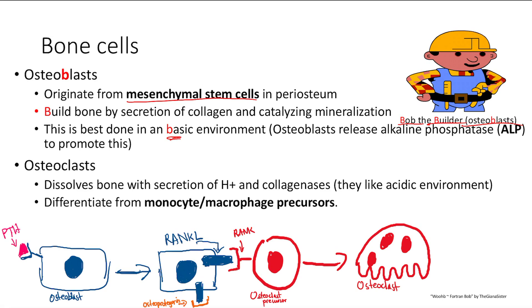Osteoclasts do the opposite — they dissolve bone. They secrete hydrogen ions and collagenases, so they prefer acidic environments. Osteoclasts differentiate from monocyte and macrophage precursors. It's easy to remember: macrophages eat up bacteria, and osteoclasts eat up bone — both eat up things. That's how you remember that osteoclasts come from macrophage precursors.